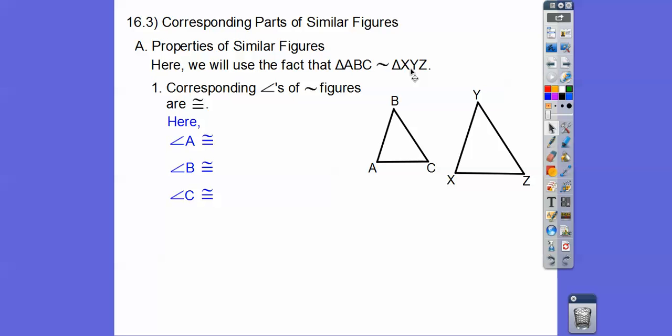So Angle A would correspond with X. And then the second letter would correspond. So B would correspond with this second letter, Angle Y. And finally, C and Z are corresponding.